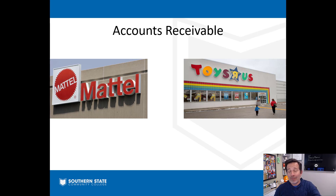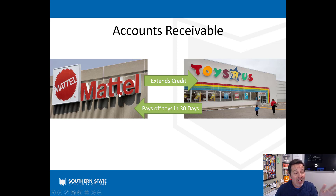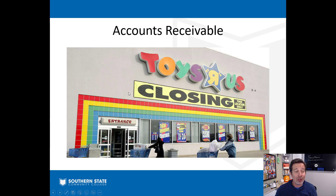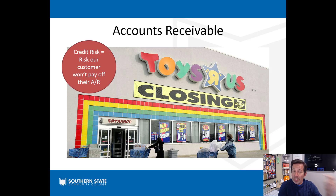In a perfect world, we could extend credit and people would always pay us back. For example, Mattel could sell a thousand Barbie dolls to Toys R Us on credit, and Toys R Us would pay off that account receivable within 30 days. But we live in the real world — sometimes Toys R Us goes out of business and can't pay off that account receivable. We call that credit risk.